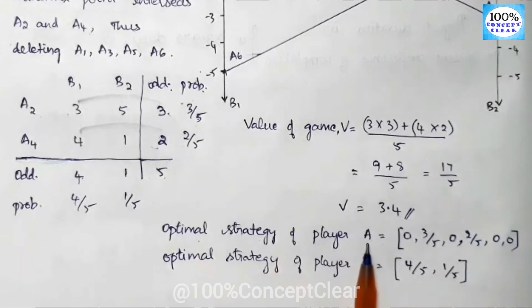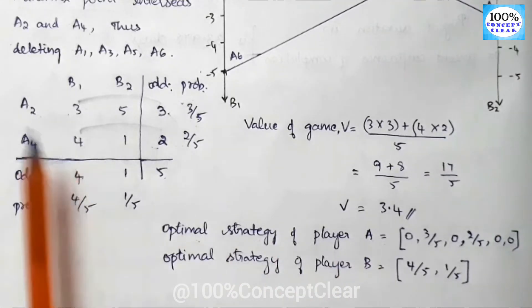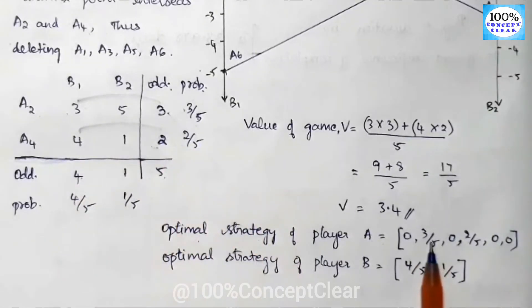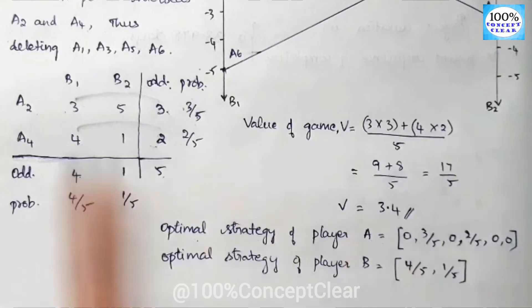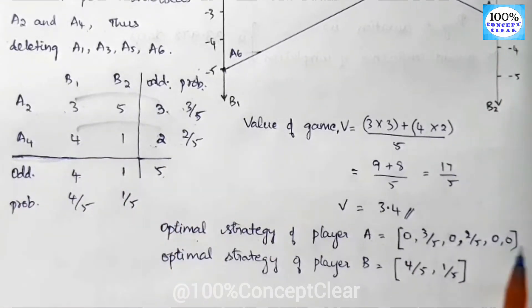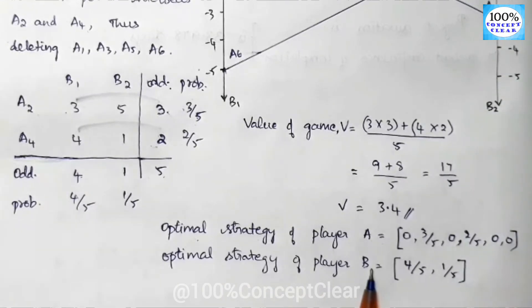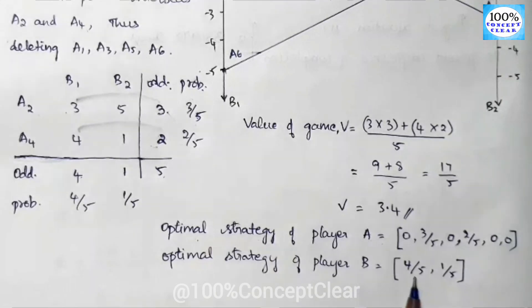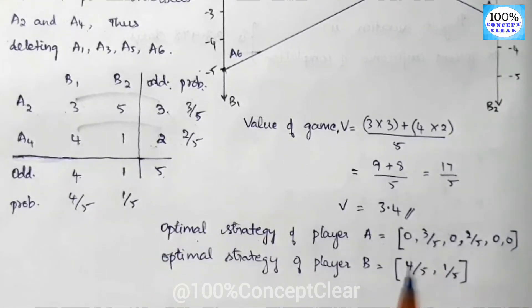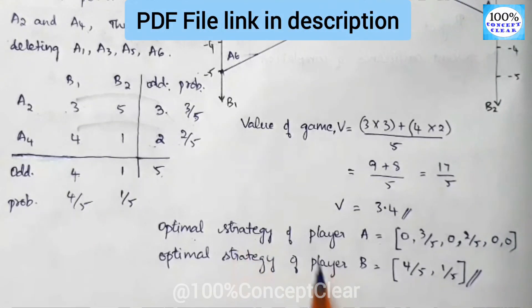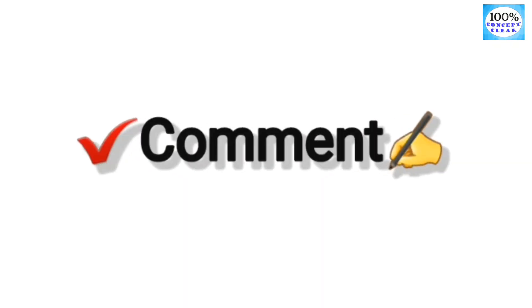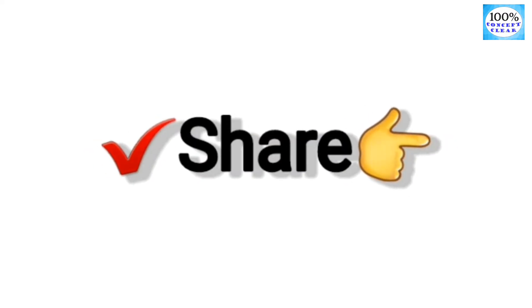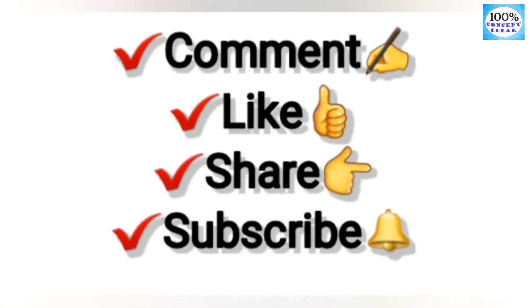The optimum strategy for Player A: out of 6 total strategies, Player A should use A2 and A4. Player B uses both strategies — B1 with probability 4/5 and B2 with probability 1/5. The value of the game is 3.4. If you find this video useful, please like and comment. Thank you for watching.